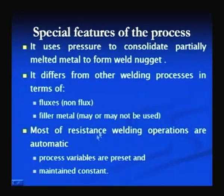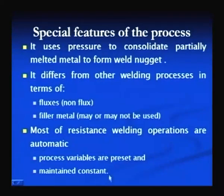Most resistance welding processes are automatic, while arc welding processes can be automatic or manual. Because of this nature, the process variables are identified and established first and set before proceeding with welding. During welding, the entire process parameters are maintained. In arc welding, parameters can be adjusted as per needs. Since resistance welding processes are mostly automatic, identification of variables is very important and those parameters must be maintained to produce successful joints continuously in production.